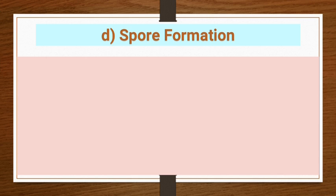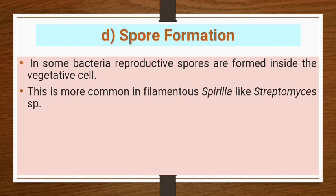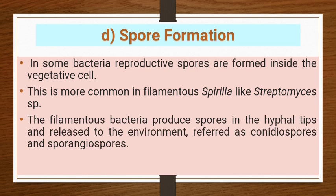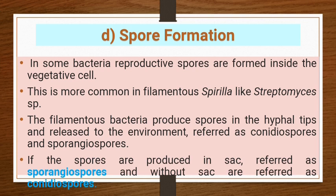The fourth method is spore formation. Some bacteria reproduce by forming spores inside the vegetative cell. The spore is the dormant or mature phase of the bacterial cell. This is more common in filamentous bacteria like Streptomyces species. The filamentous bacteria produce spores at the hyphal tip, released as conidiospores or sporangiospores. Spores produced in a sac are called sporangiospores; those without a sac are called conidiospores.